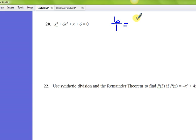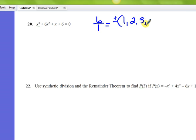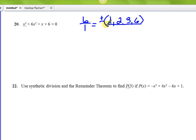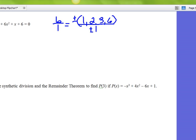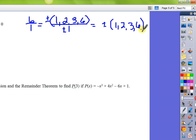One, two, three, and six. And all the factors of one are just simply plus and minus one, and that makes it a little bit easier. So our list consists of eight numbers all together, and they are plus and minus one, two, three, and six. What this simply means is if these numbers don't work, then there's no point in looking for any other rational zeros.